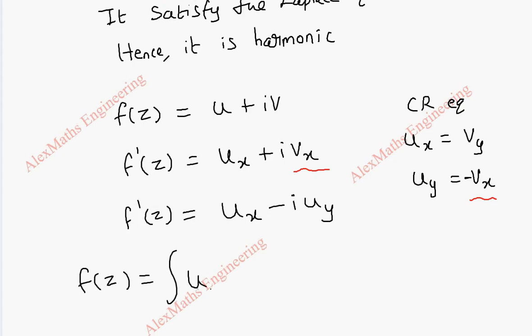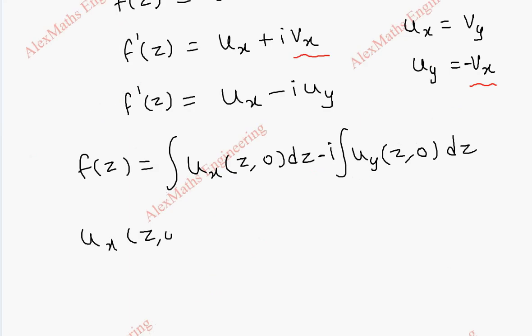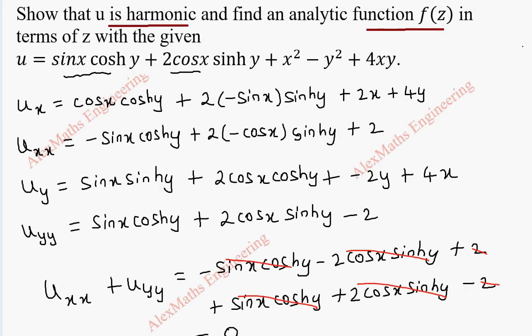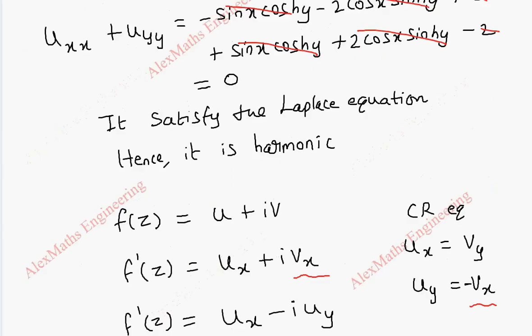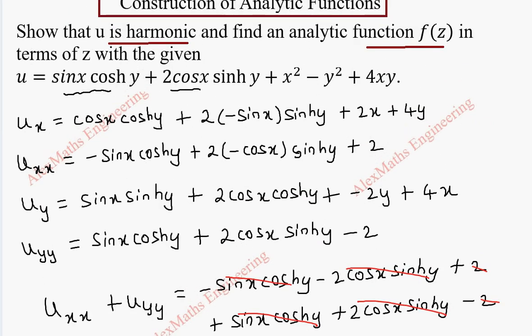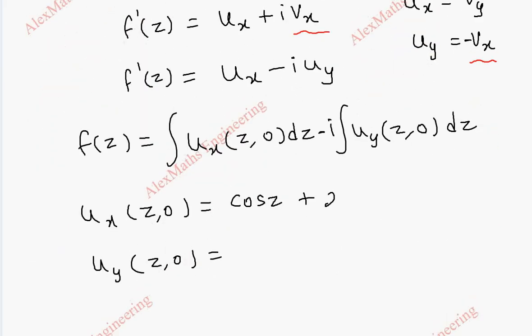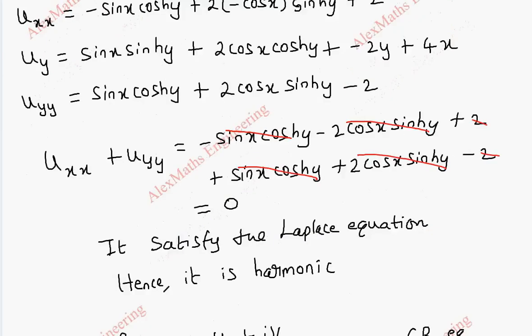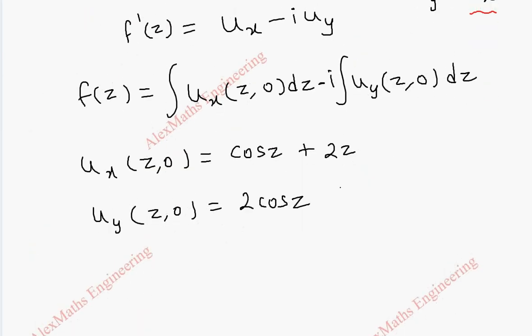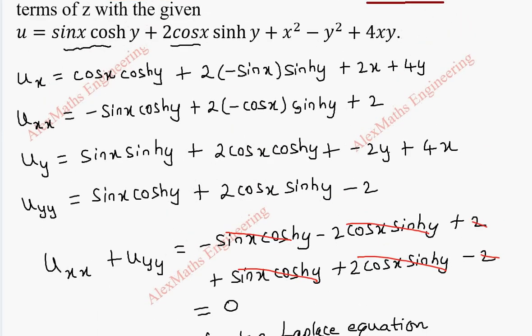f of z becomes integral u_x of z comma 0 dz minus i integral u_y of z comma 0 dz. Now, we have to find what is u_x of z comma 0 and u_y of z comma 0. Wherever x is there, we have to put z and y, we have to substitute as 0. So, this is cos z and this becomes 1, we get only cos z as a first term. Then, here, when I put y as 0, everything is 0. Last term is 0 and we have only 2x that becomes 2z. Similarly, for u_y, when this is 0, everything is 0. When this is 0, we get 2 cos z because cos term becomes 1. And here, this last term is 4z and minus 2y becomes 0, so plus 4z.